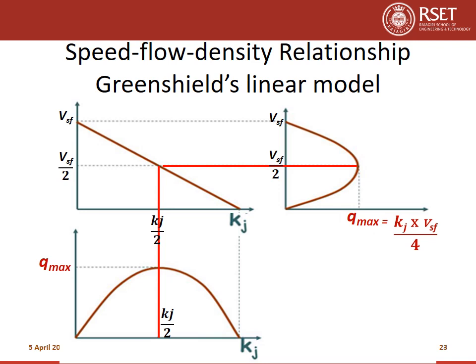In the bottom graph, Q_max is shown with its corresponding density value Kj/2 on the x-axis. A red line is drawn upward to the K-V curve, and the y-axis value at that intersection is Vsf/2. A horizontal red line then connects to the Q-V curve, where Vsf/2 corresponds to Q_max, which equals Kj times Vsf divided by 4. This is the speed-flow-density relationship of Greenshield's linear model.